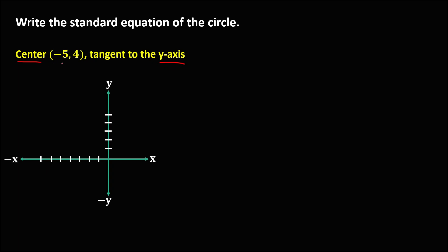First, we need to plot the coordinate of the center. So x is negative 5 and y is positive 4. Then we connect to locate the point of the center. Since the circle is tangent to the y-axis, this is the tangent line. The radius goes from the center to the tangent line, so this is now the radius.